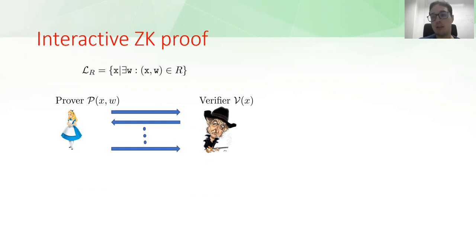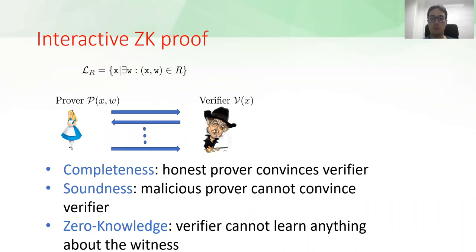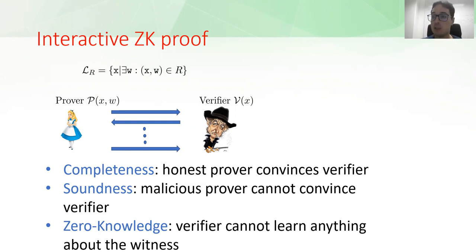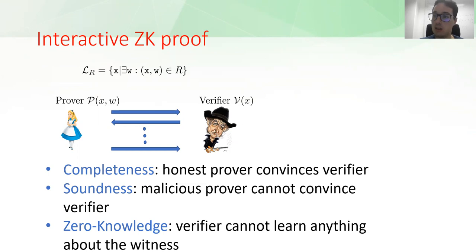The verifier outputs accept if it is convinced that the prover knows the witness. We require this protocol to enjoy three properties: completeness, meaning an honest prover always convinces the verifier; soundness, meaning a malicious prover cannot convince the verifier of a false statement; and zero-knowledge, meaning at the end of the interaction, the verifier cannot learn anything about the witness.